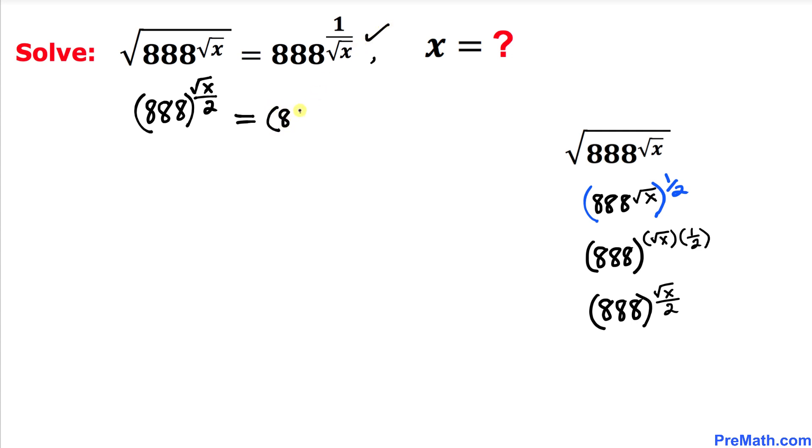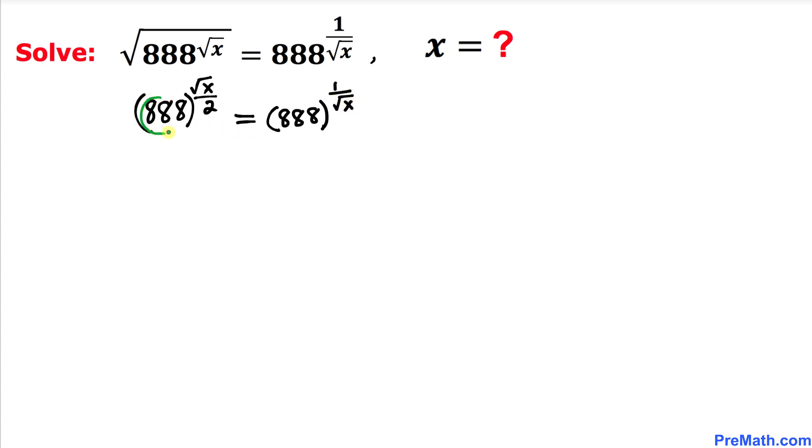The right side is 888 to the power of 1 over square root of x. Now we can see that our bases are 888 on both sides, and since the bases are the same, we can equate their exponents.